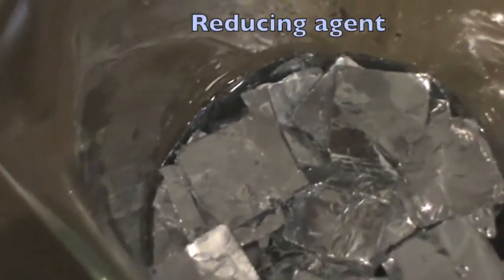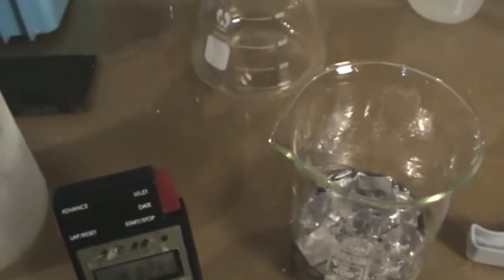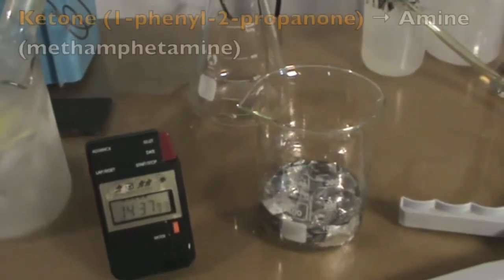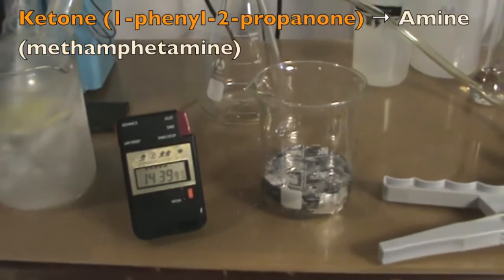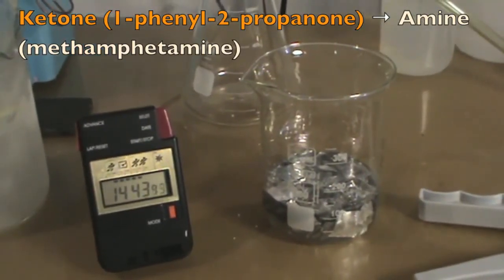We now have our reducing agent. Creating an aluminum amalgam is crucial because we want to reduce the ketone, which in this case is 1-phenyl-2-propanone, to an amine, which in this case to methamphetamine.